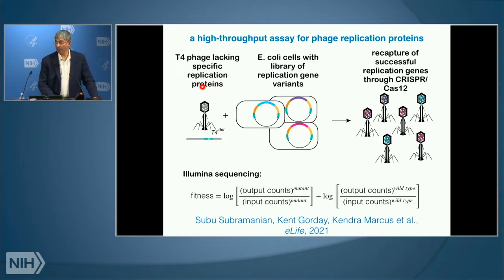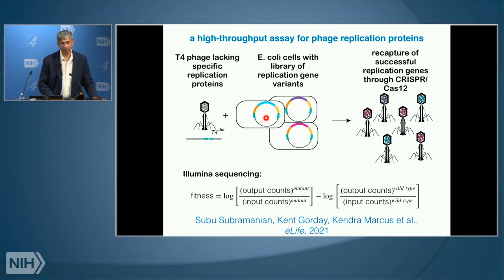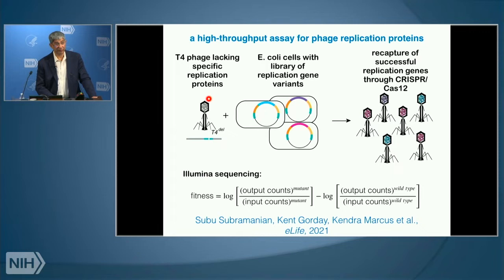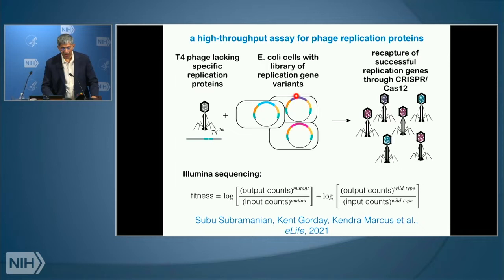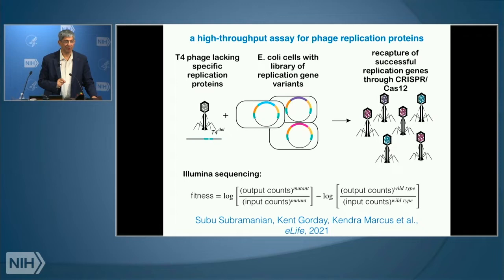What Subu did was to engineer the T4 bacteriophage so that specific replication proteins of interest — the sliding clamp and clamp loader — are deleted. These modified phage can infect E. coli but are unable to replicate. However, if the E. coli contain plasmids with coding regions for these replication proteins, the E. coli will make the proteins and the T4 can use them for DNA replication. If the E. coli contains a library of variants of these replication proteins, ones that work better will produce more phage than ones that don't work so well.